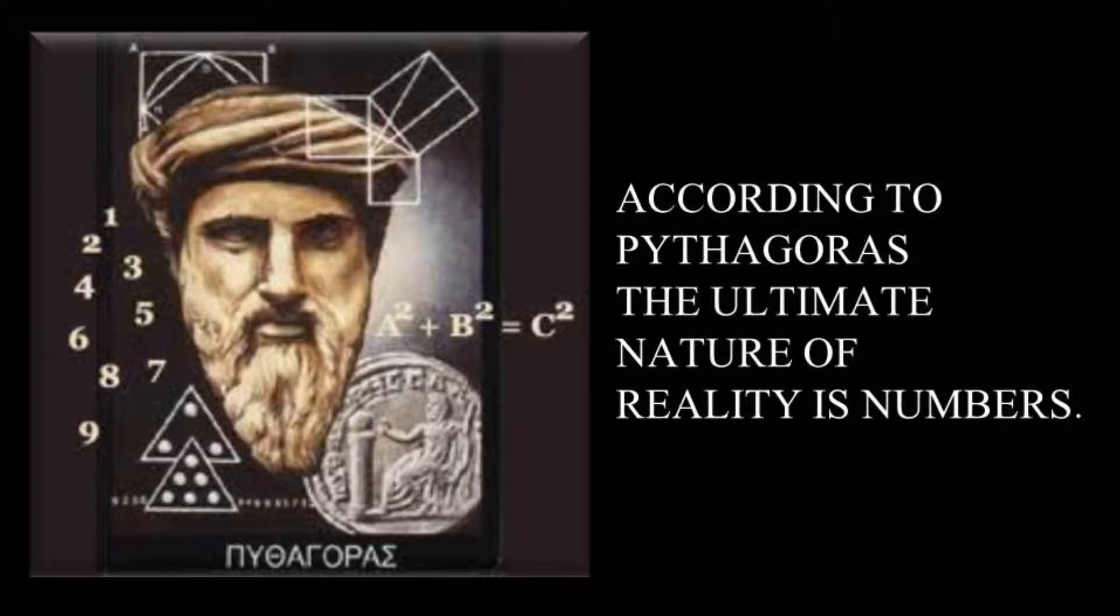After his death, Pythagoras' school split into two separate schools. One continued to teach his religious and mystical teachings, while the other concentrated on his mathematical and scientific insights.